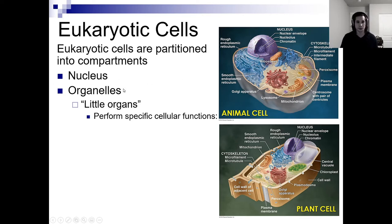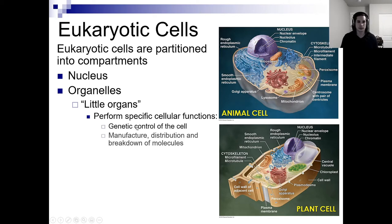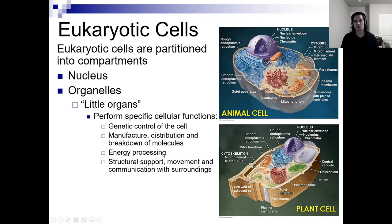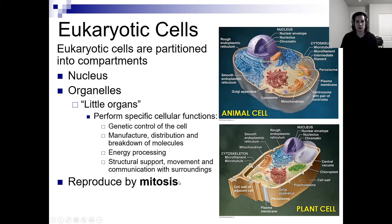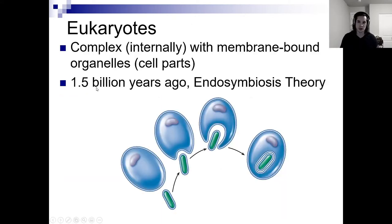In our eukaryotic cells we also have organelles — little organs that perform specific cellular functions — things like genetic control of the cell, manufacturing, distributing, breaking down molecules, energy processing (that's probably referring to the mitochondria), structural support, movement, and communication with surroundings (that's probably like your cytoskeleton). Eukaryotic cells will reproduce via mitosis, which refers to the division of the nucleus. Cytokinesis refers to the division of the cell into two cells — the splitting of the cytoplasm.